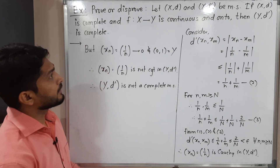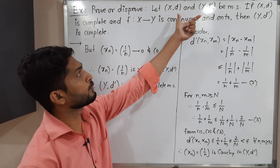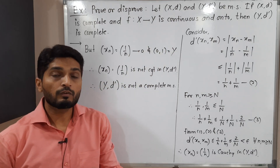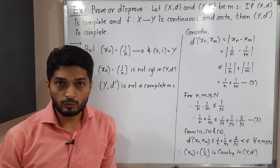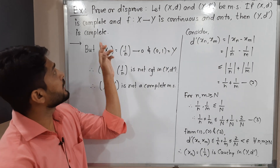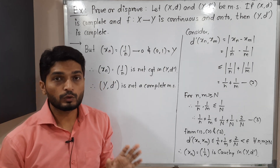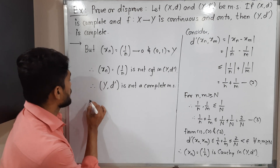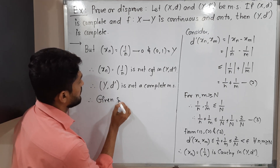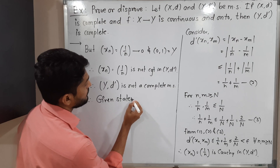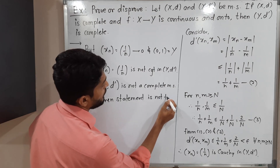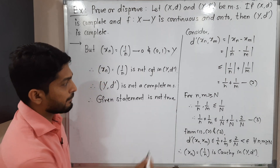So finally, we took two metric spaces (X, d) and (Y, d'): (X, d) is complete, we found an identity function which is continuous and onto, and we proved that (Y, d') is not complete. Therefore the given statement is not true, and this completes the example.